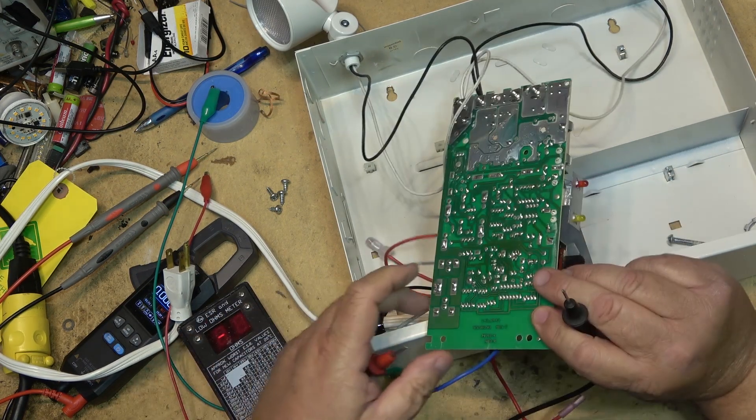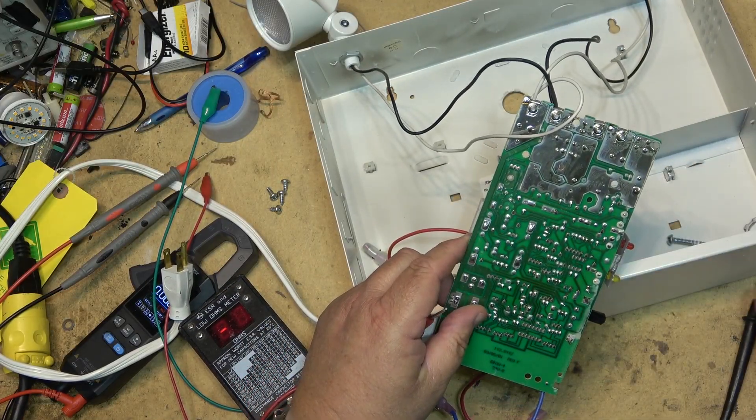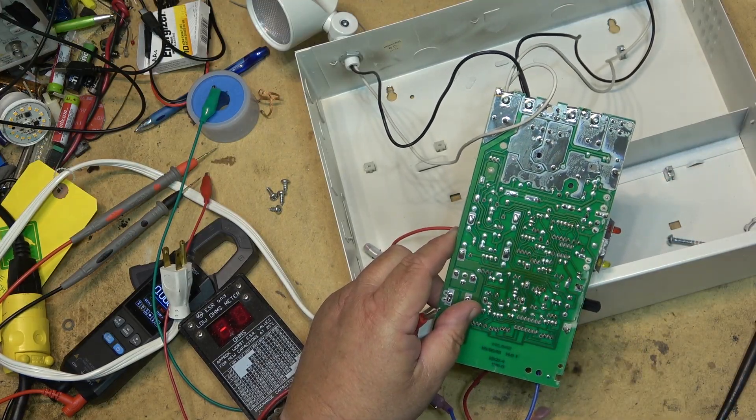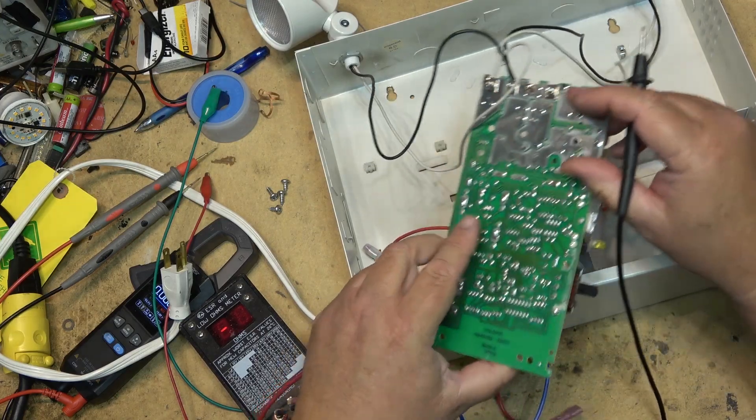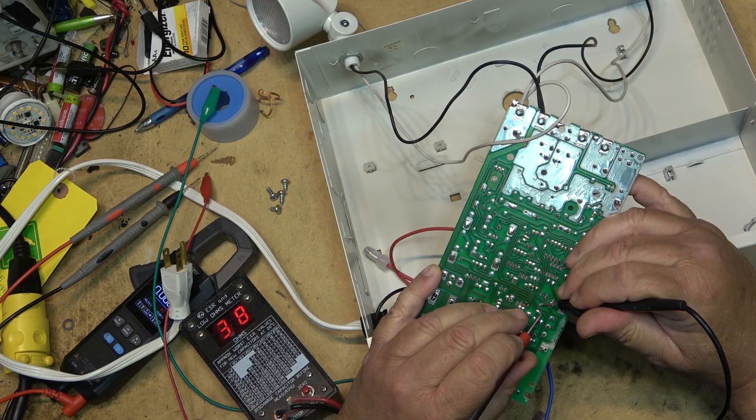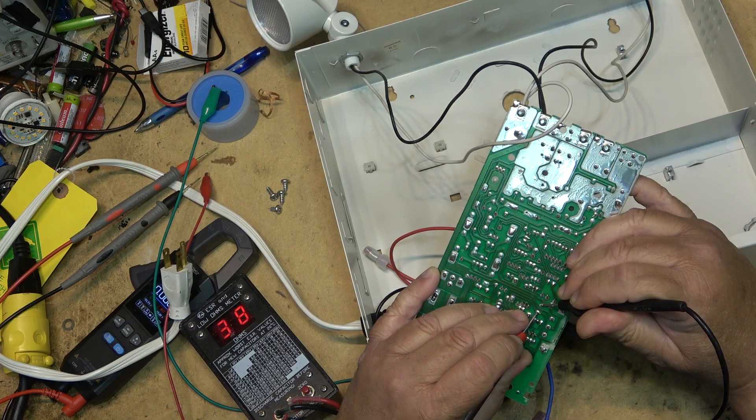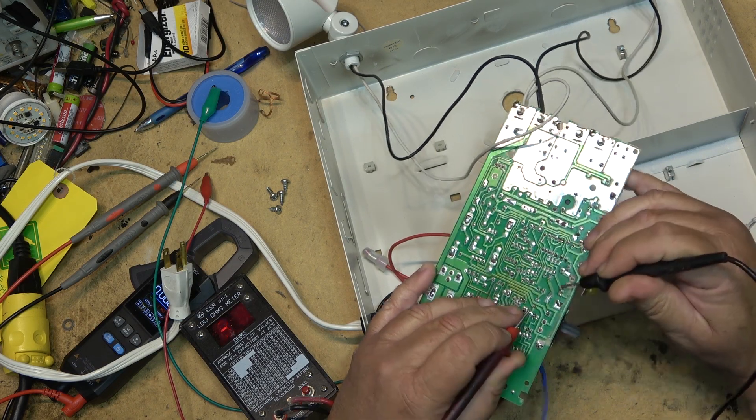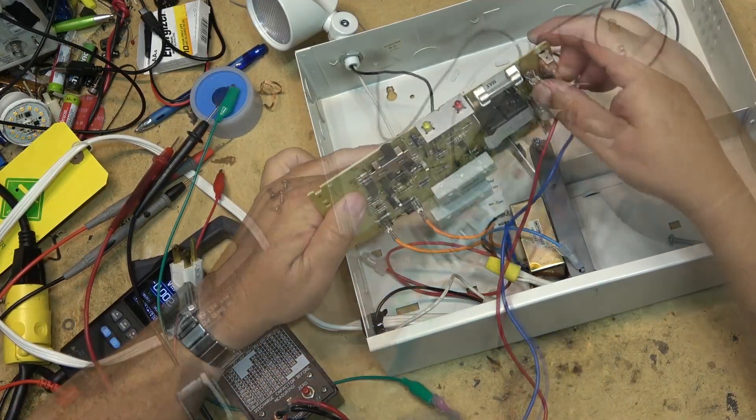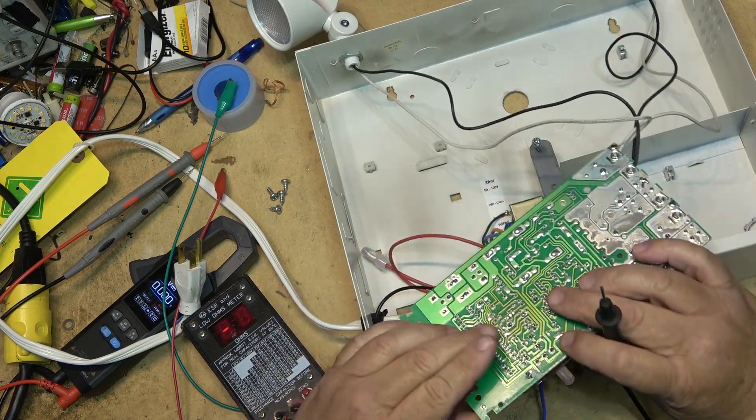The first thing we'll do is we'll discharge the caps just to make sure that there's no charge stored in them to blow up my meter. There, I think everything is dead now. That first cap I want to check is this one right across here, and this one measures 38. Yeah, I think that's a little high. We'll change that one out. I bet you that's the fault. We can check the other ones while I'm at it since the meter's still going here, but I think it's going to be that first one that I just checked there.